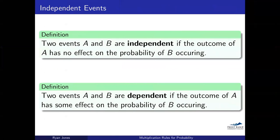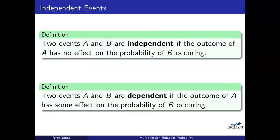Just like we started off last time talking about the definition of mutually exclusive, we're going to start off with a definition that's equally as important, and that's independent events. Two events A and B are independent if the outcome of one of them has no effect on the other. A simple example might be rolling a die and flipping a coin — each has its own probability, unaffected by the other. We contrast that with dependent events, where the outcome of one affects the outcome of another. Drawing cards from a deck is a great example of that.